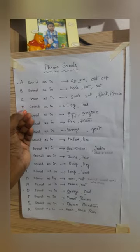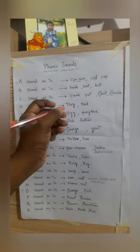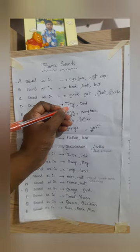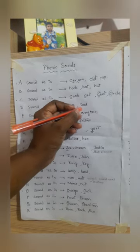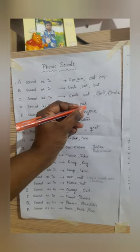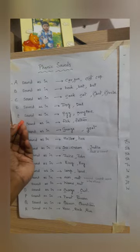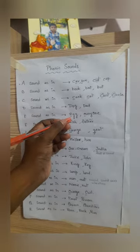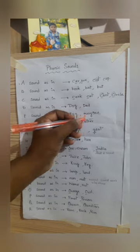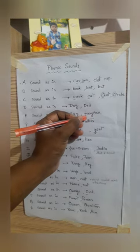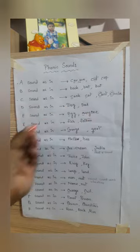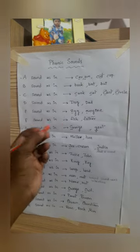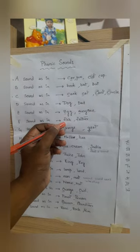Now coming to the letter D, the sound is 'd' as in dog, 'd' as in dad. Coming to the letter E, the sound of E is 'e' as in egg, 'e' as in everyone. Coming to the letter F, the sound is 'f' as in fish, as in father.